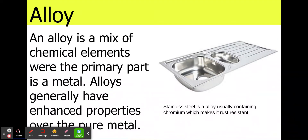Alloy. An alloy is a mixture of chemical elements where the primary part is a metal. Sometimes two metals mixed together, sometimes a metal with other substances. Alloys generally have enhanced properties over the pure metal. Here is stainless steel, which is an alloy containing chromium and steel. The chromium makes it rust resistant.